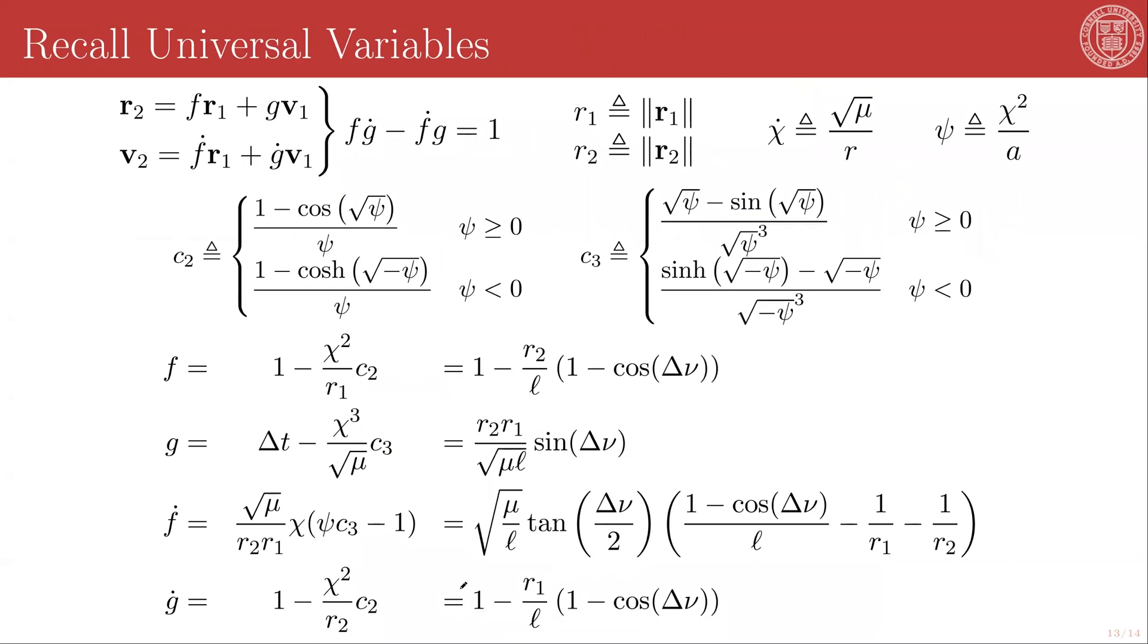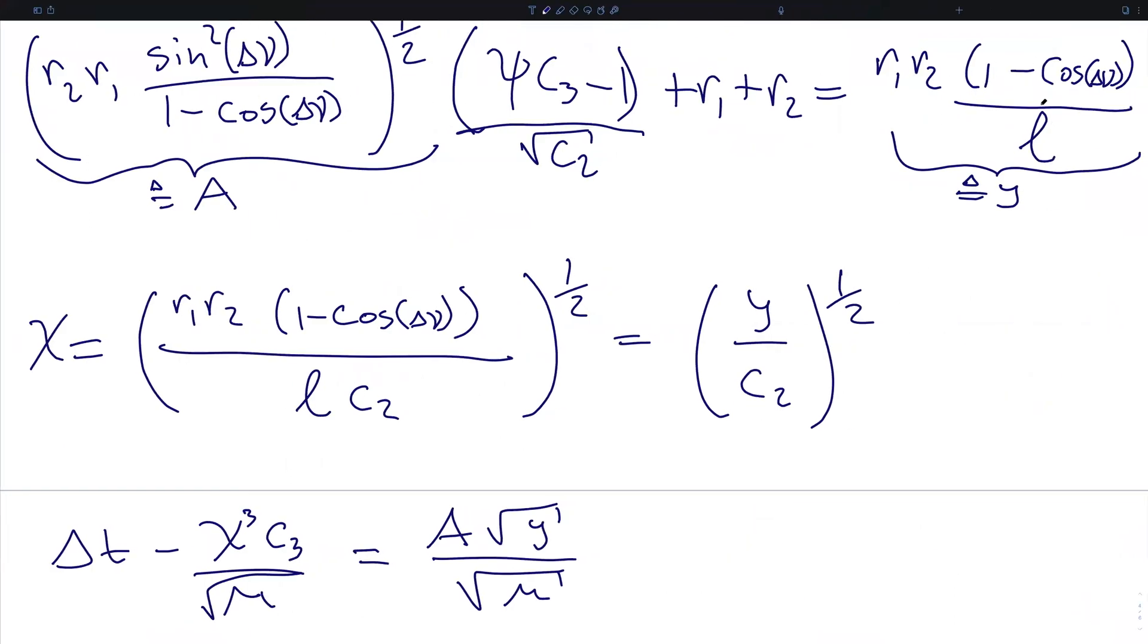By inspection, we can also see that the g dot function is equivalent to just 1 minus y divided by r2, again based on this definition of y.